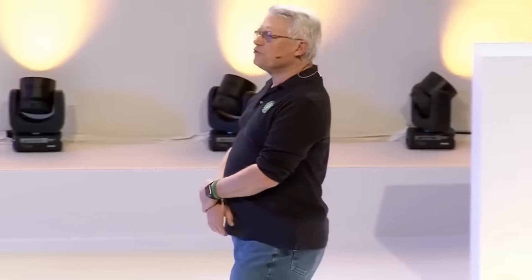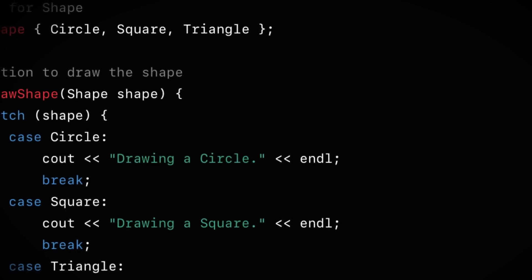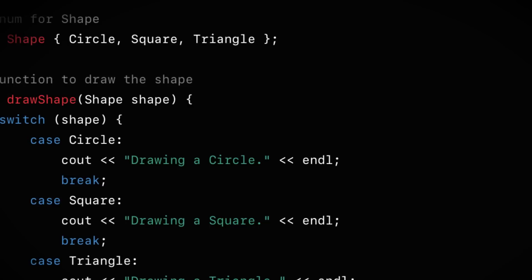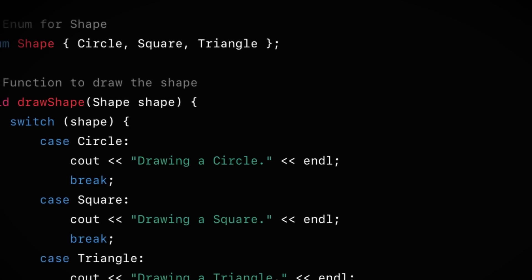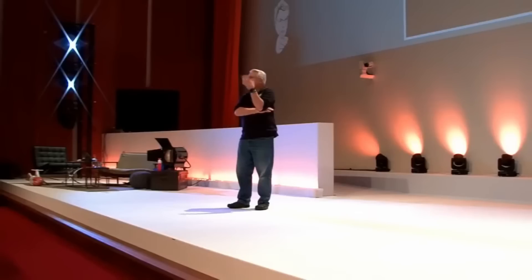So let's say we've got a switch statement. This switch statement switches on the type of a shape. There's a shape, and there's an enum somewhere that defines circle and square and triangle and so on — traditional kinds of objects. You've got a switch statement that switches on this shape type. How many such switch statements will there be in the system?